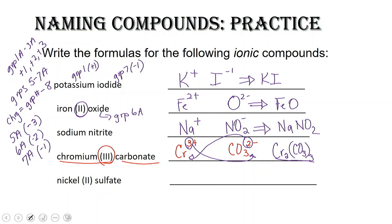Our very last problem is nickel(II) sulfate. Nickel — notice we've got a Roman numeral, so it's a transition metal. Nickel is Ni and it's got a two plus charge. Sulfate — go back to your polyatomic ion table — has a two minus charge. One of each of these together will give me a neutral compound.